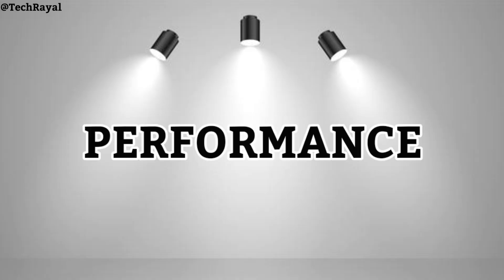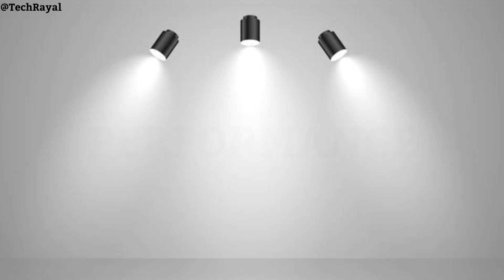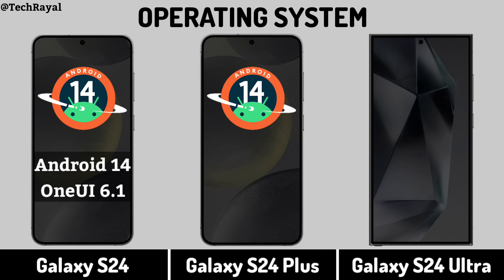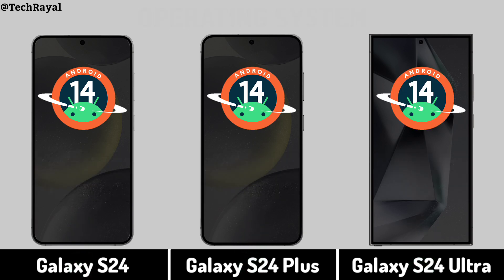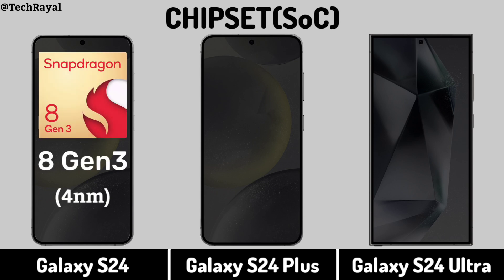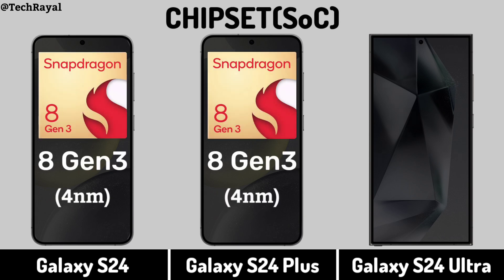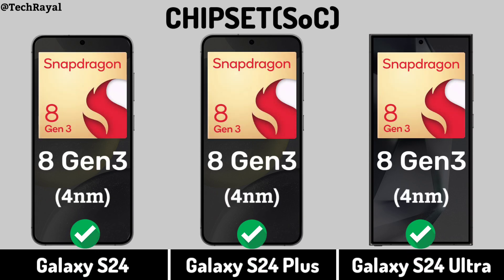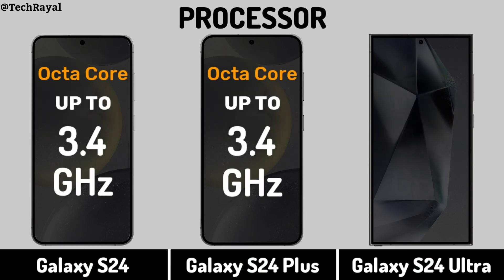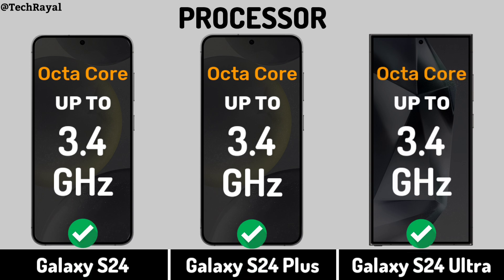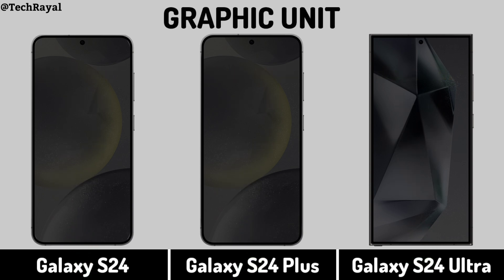Now Core Performance: Operating System. Chip. Processor. Graphic Unit.